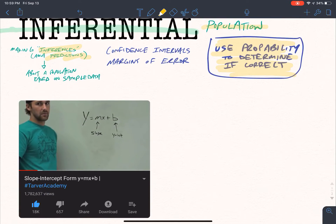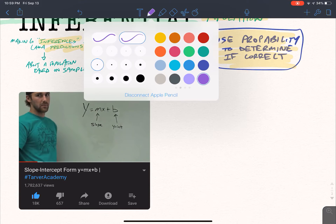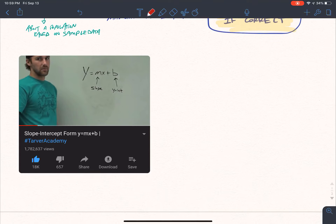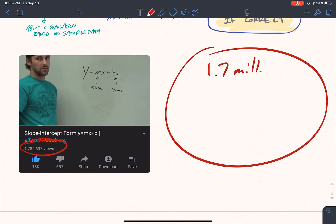Most people can look at a graph and tell you what they see with the inferential you're using the probability here to determine whether or not something is correct. So, I'll give you an example. So let's say I brought in this video, or picture, screenshot of my video I'd have on slope intercept form. Okay. So I've got 1.7 million views. Let's say I wanted, so that's my entire population is 1.7 million. Okay.